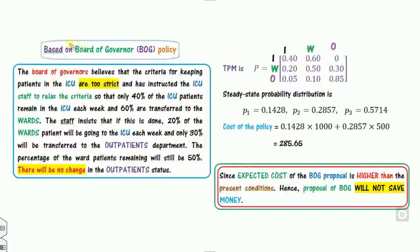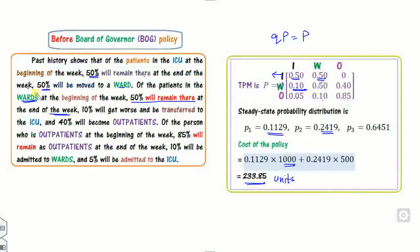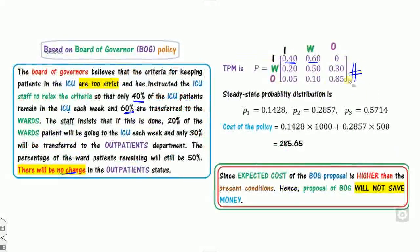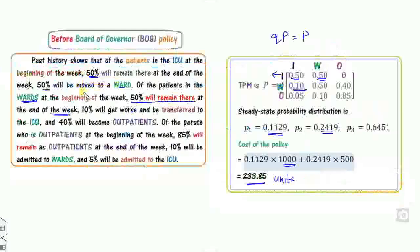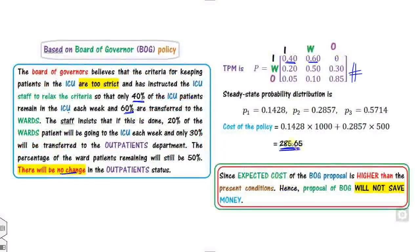Under the board of governors' proposed policy, only 40% of ICU patients remain in ICU and 60% are transferred to the ward. The outpatient transition remains unchanged — 5%, 10%, and 85%. Recalculating the steady-state probabilities under this new TPM gives an expected cost of approximately 285.65 units. Since the proposed policy cost (285.65) is higher than the original cost (233.85), the board of governors' proposal will not save money.